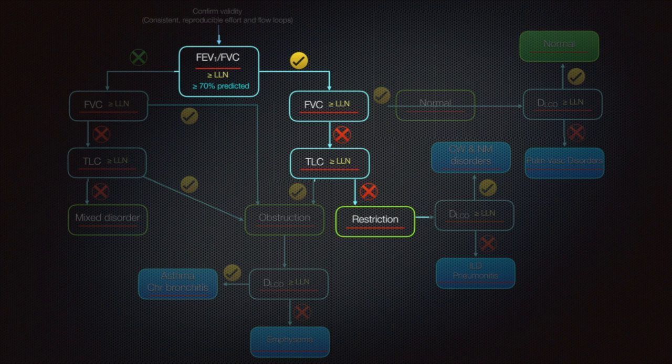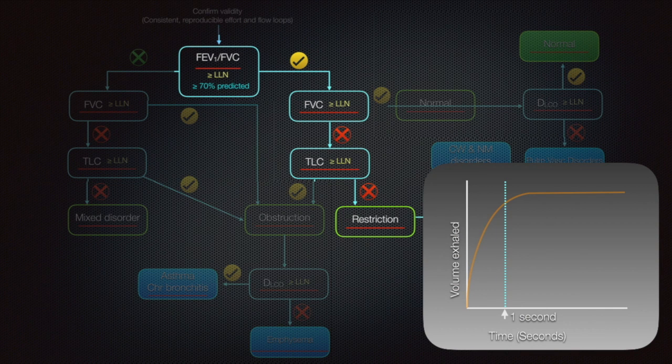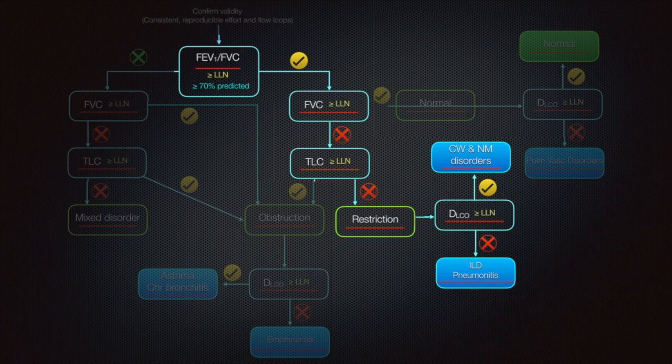When FVC is seen to be reduced, proceed to check total lung capacity. A reduced TLC will take us to a diagnosis of restrictive lung disease. The tracing for restrictive lung disease shown earlier also shows a normal FEV1 by FVC ratio, reduced FVC, and now we can proceed with DLCO value. If the lung is shrunken and diffusion capacity is normal, we may be dealing with a chest wall abnormality or neuromuscular disorder. However, if DLCO is reduced, we are dealing with interstitial lung disease or pneumonitis.